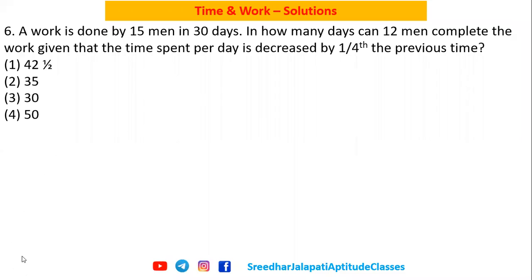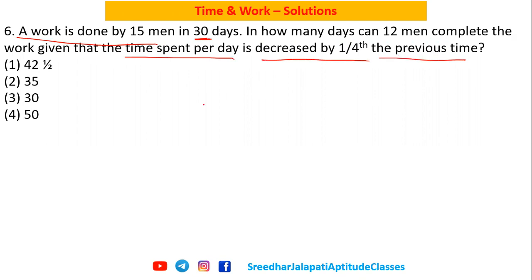Here is the solution for question number 6 from time and work. The work is done by 15 men in 30 days. In how many days can 12 men complete the work, given that the time spent per day is decreased by one-fourth of the previous time?